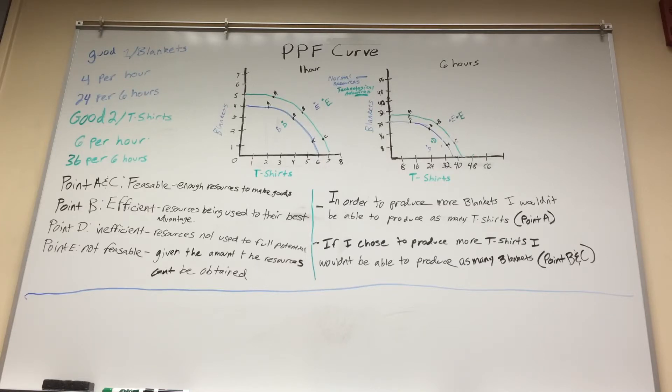Now in order to produce more blankets like I said I would not be able to produce as many t-shirts which is represented by point A, and if I chose to produce more t-shirts I wouldn't be able to produce as many blankets which are shown by points B and C. What I chose as my most efficient would be for every six hours I'd be producing 16 blankets and 24 t-shirts and that's shown in the graph to the right.